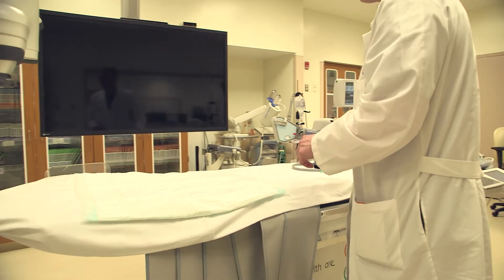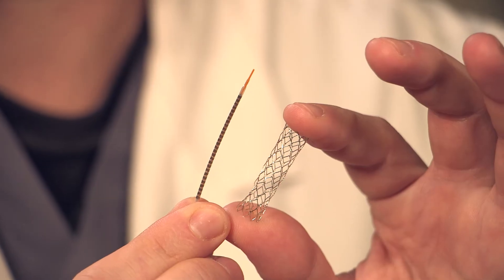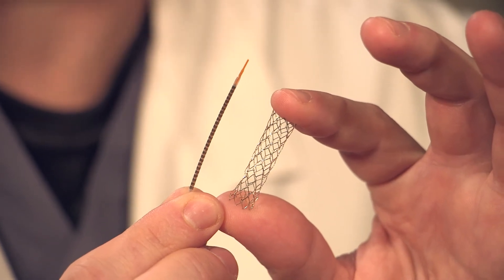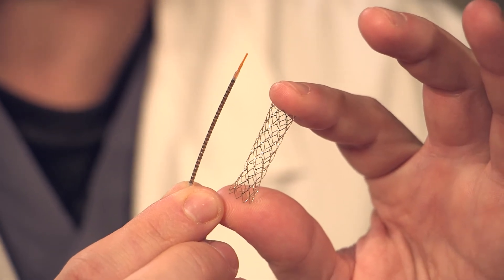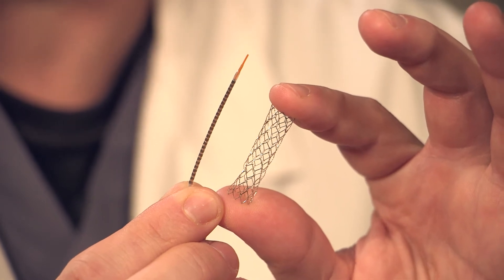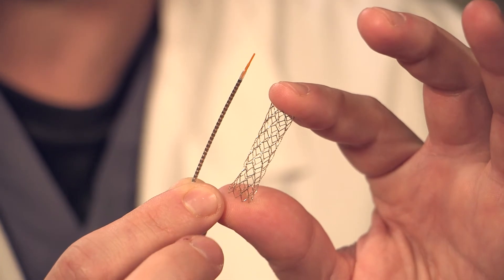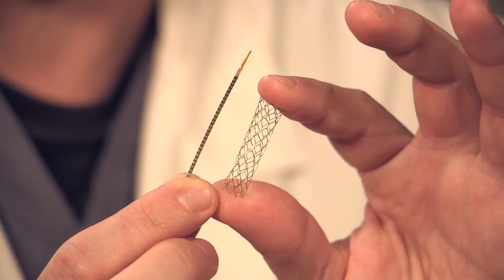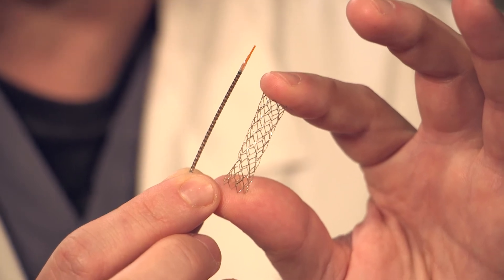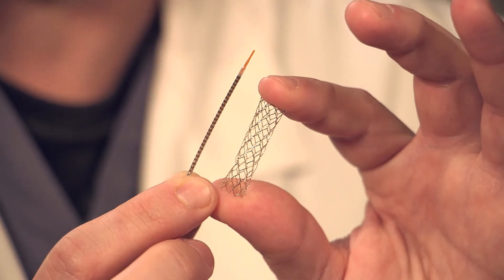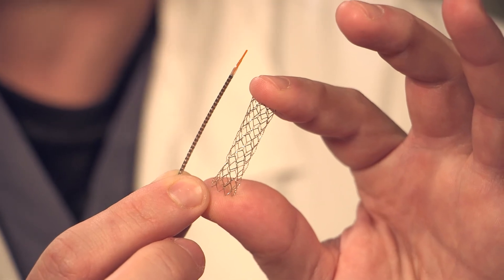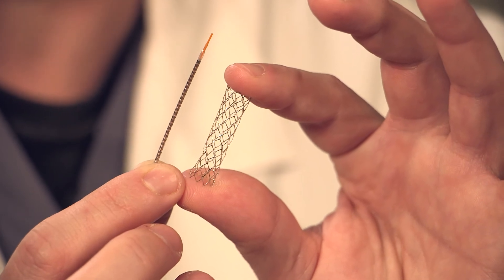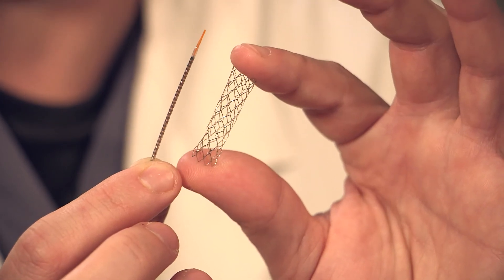Once we figure out where the blockage is, we want to treat it immediately. The way that we do that is we pass an undeployed stent through. On the left you'll see what it looks like before we implant it into the blocked artery. It is a metal device on an uninflated balloon platform. Once we get it to the position that we want, we inflate a balloon inside the stent to expand it into a cylinder. Once we take the balloon out after it's been inflated, on the right you'll see what the stent looks like after it's been deployed.